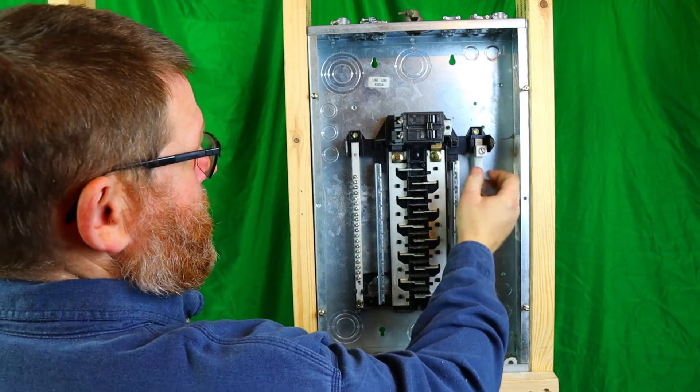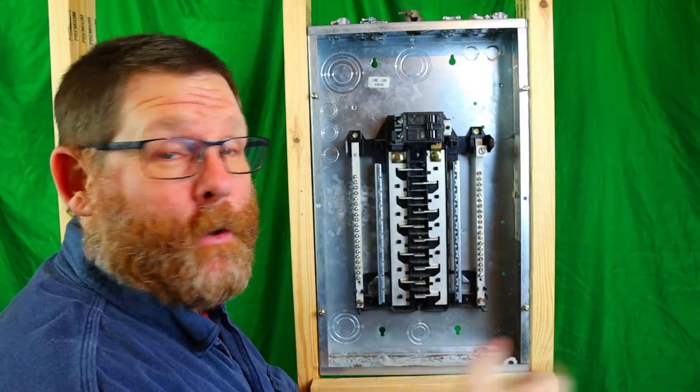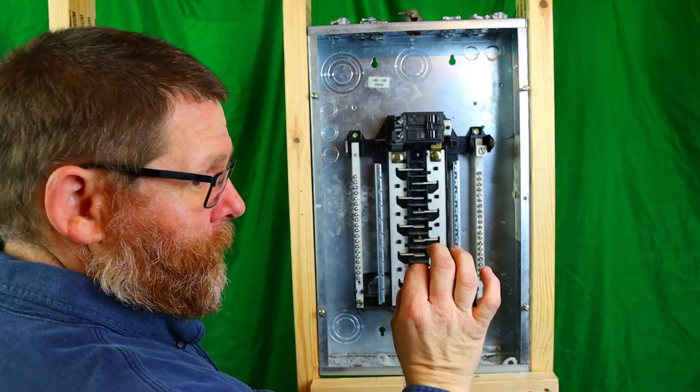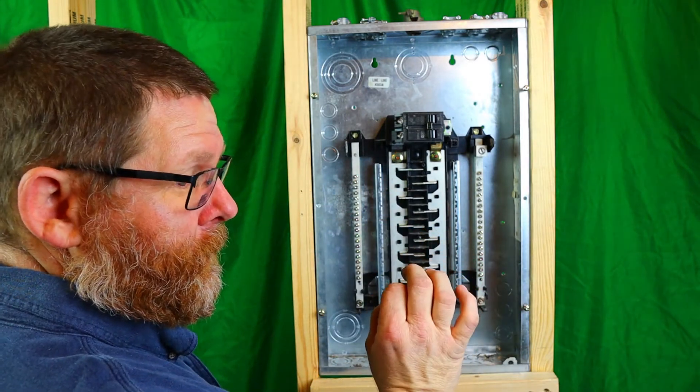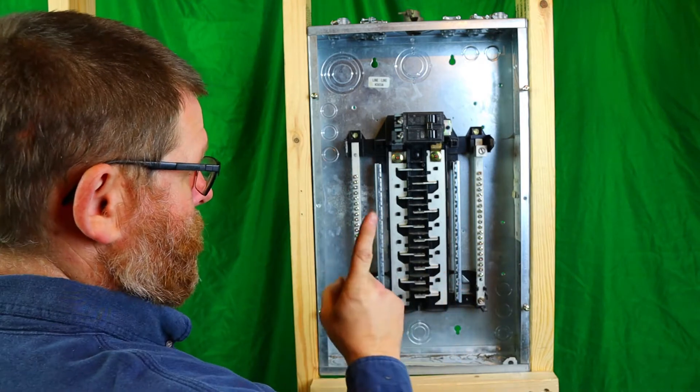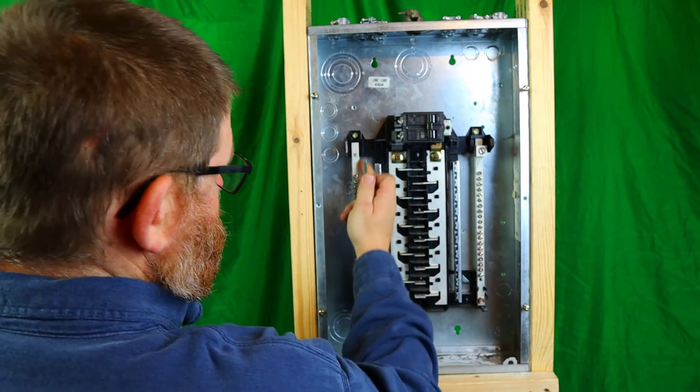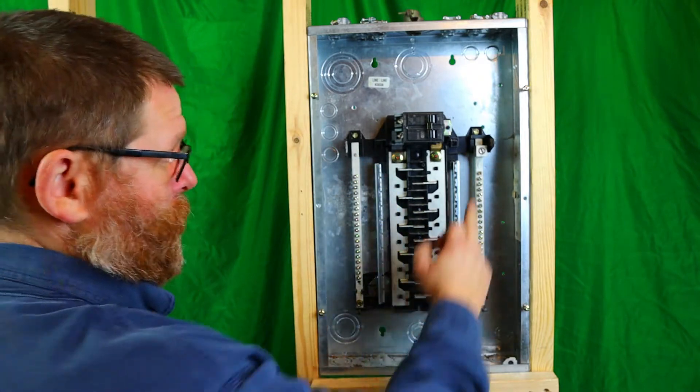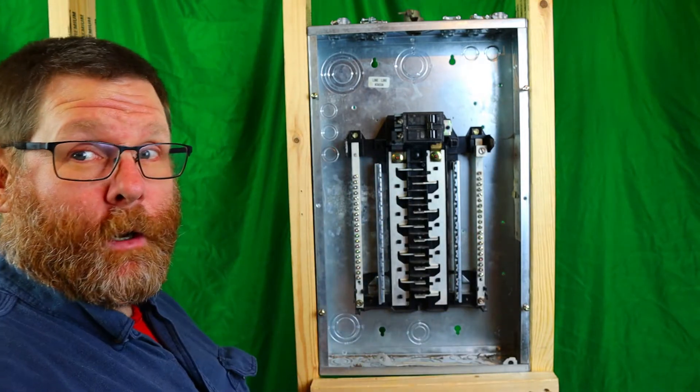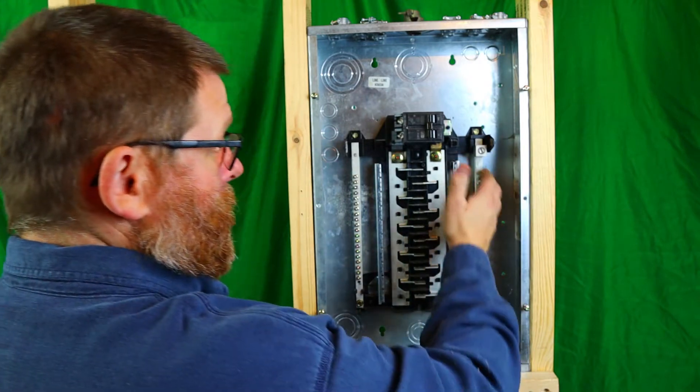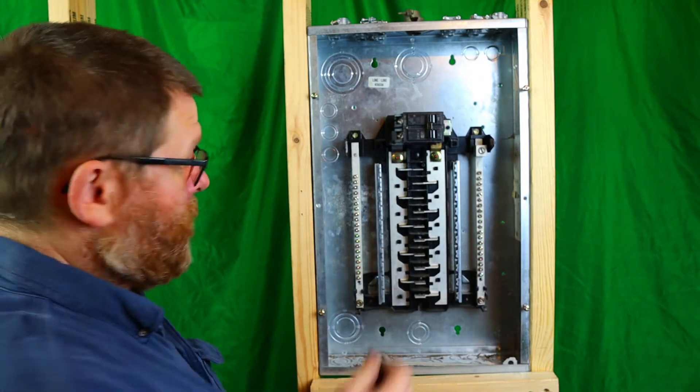So this is your neutral, and this could be over here - it doesn't really matter. But what matters on this panel is you have to bond the ground side. You do not bond the neutral. So this is going to stay non-bonded.